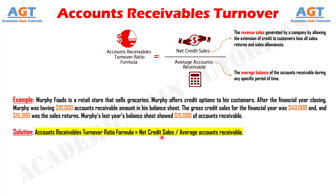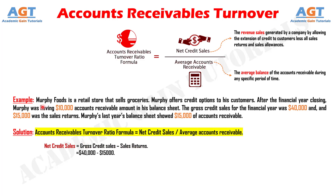In order to calculate Murphy's turnover ratio, we need to calculate net credit sales and average accounts receivable first. We can calculate net credit sales after adjusting sales returns — that is, net credit sales equals gross credit sales minus sales returns. Here, gross credit sales is $40,000 and sales returns is $15,000.